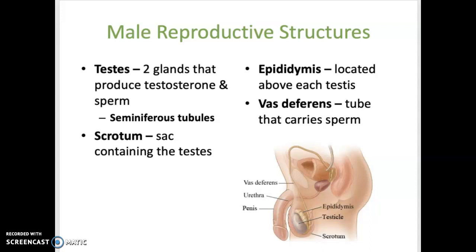The vas deferens, also known as ductus deferens, is a tube that carries sperm out of the epididymis and through the seminal vesicle.